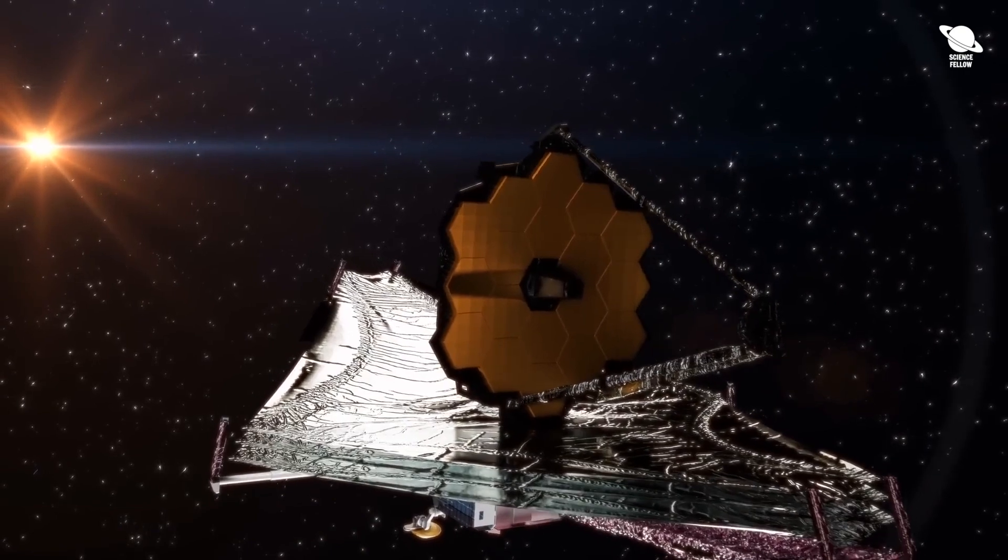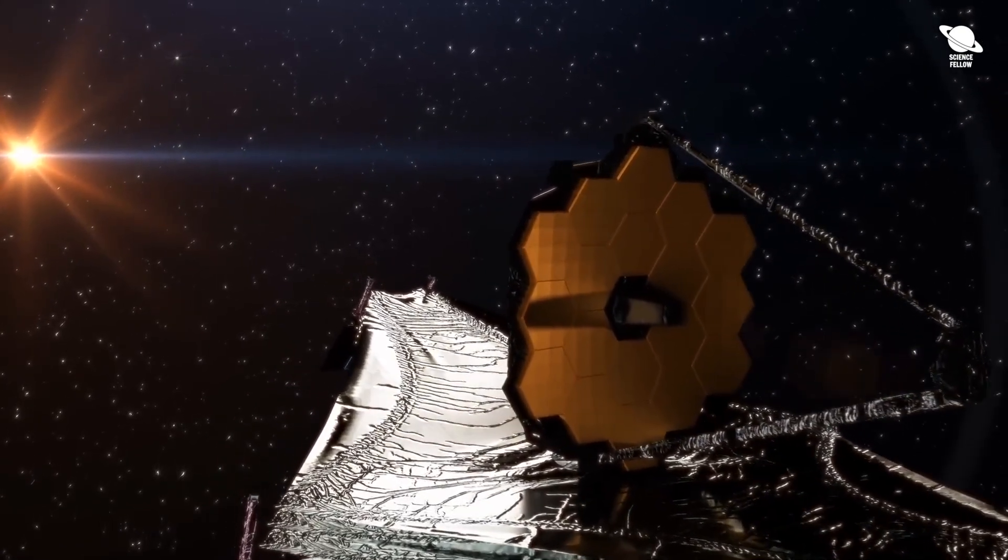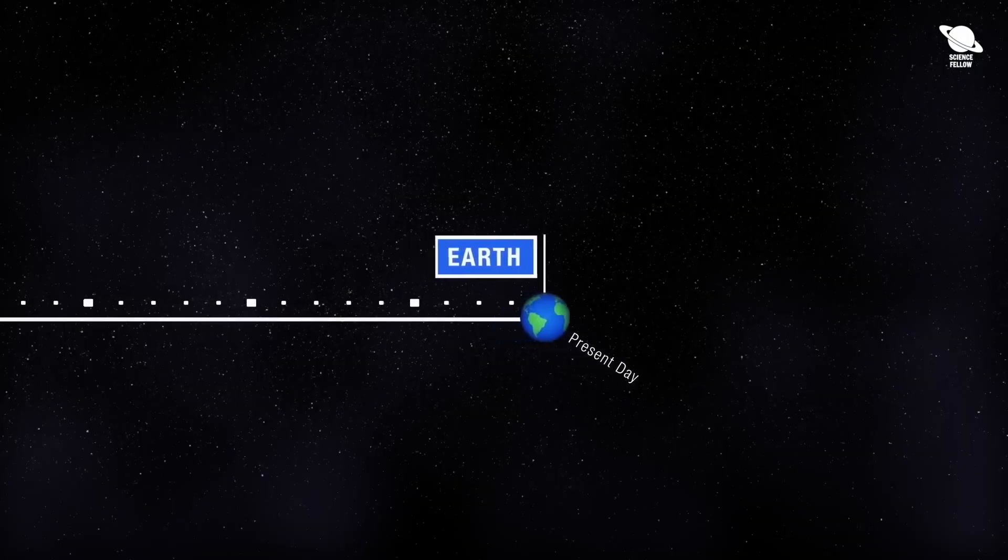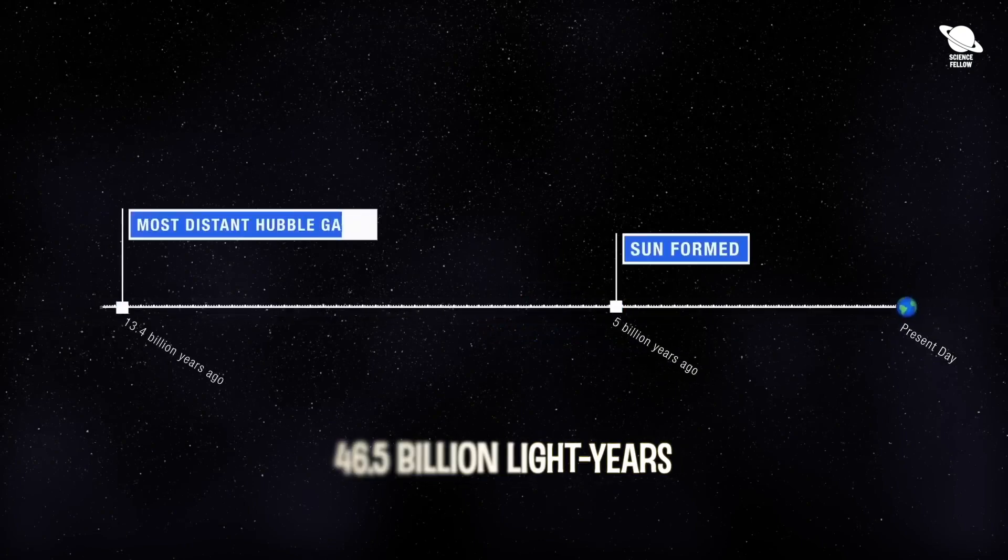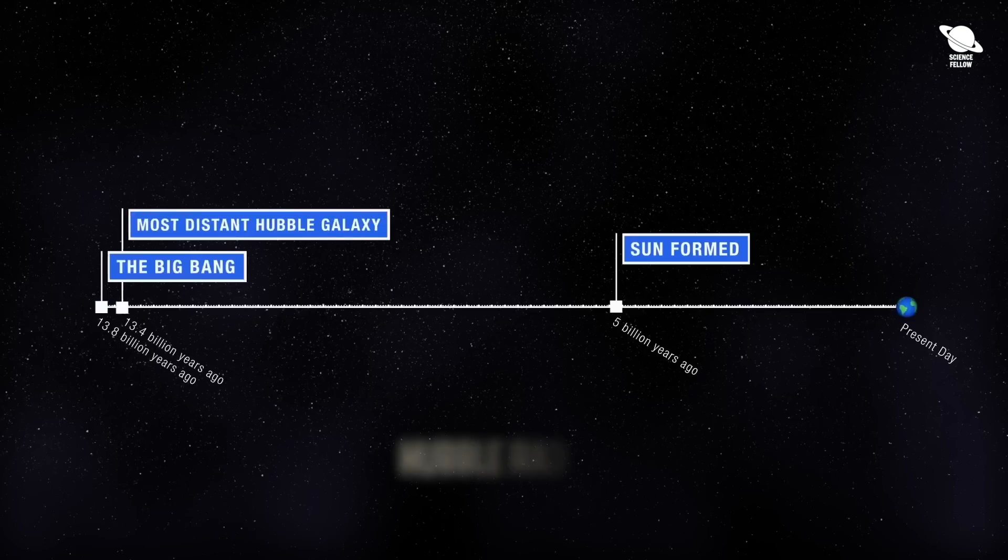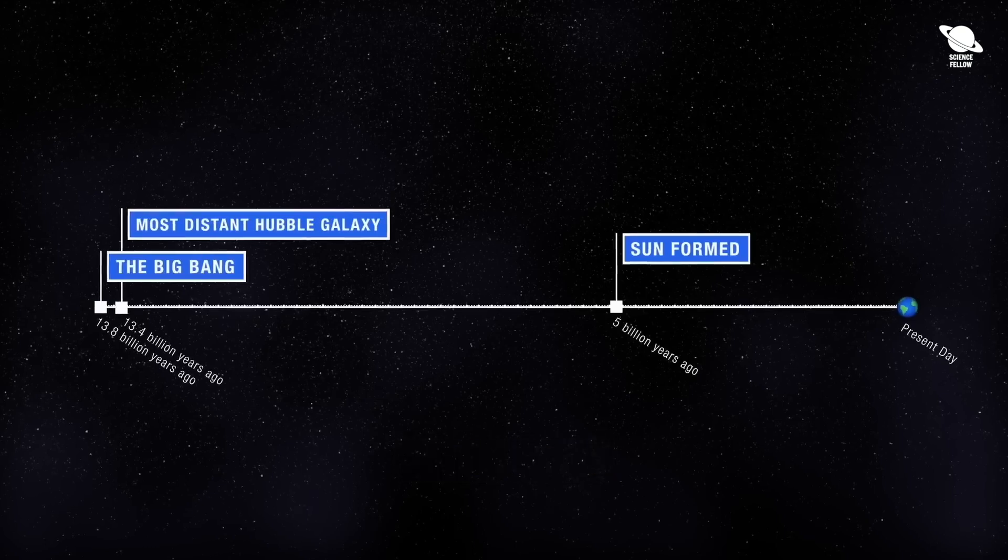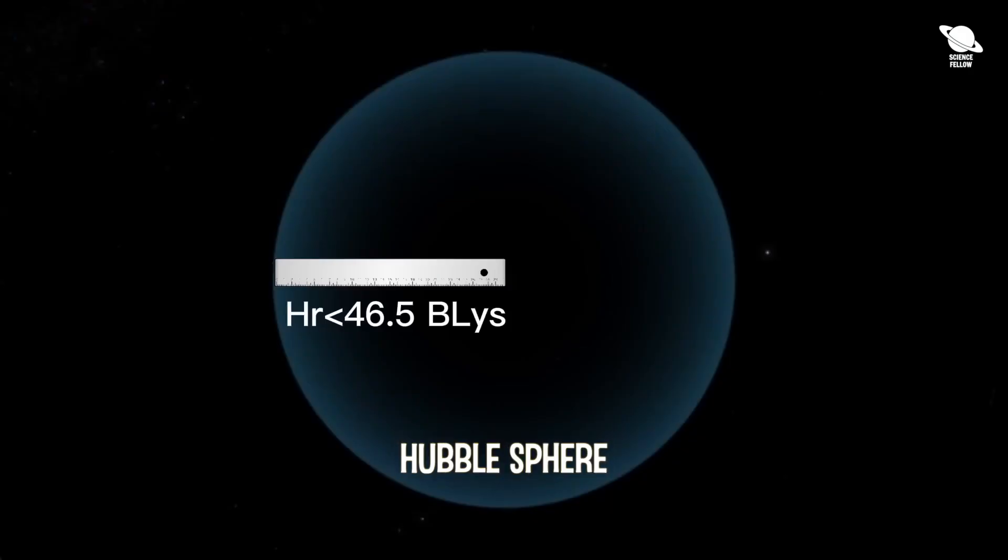Consider this. When the Webb Telescope gazes as far into space as possible, it can see only about 46.5 billion light-years away. This span is known as the Hubble Radius or Hubble Sphere, which defines the limit of our visible universe.